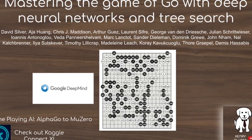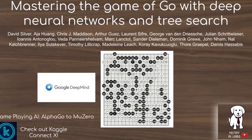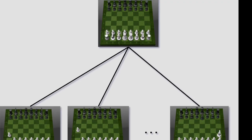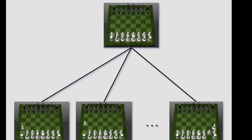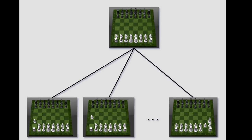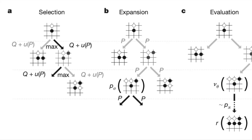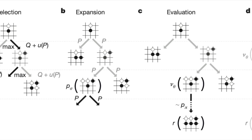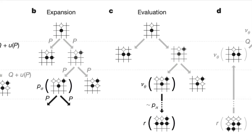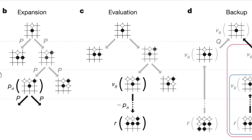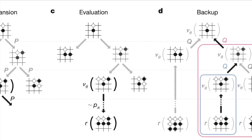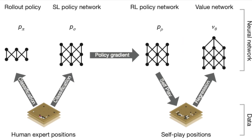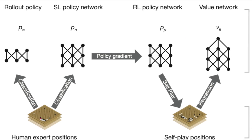Thanks for watching this explanation of how AlphaGo works. This is a really interesting algorithm that uses three policy networks and a value network in order to facilitate tree search for the highly complex game of Go, which is challenging because there are a lot of moves you can make at each state, and there's a lot of depth to the tree when doing tree search for a game like Go.